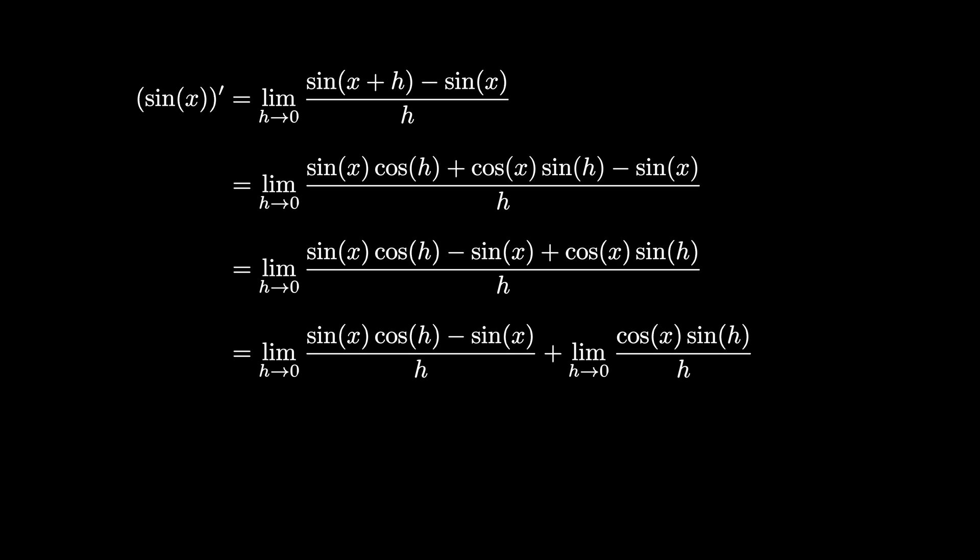In the first limit, the sine of x is constant with respect to h, so the limit becomes the sine of x times the limit as h goes to 0 of cosine h minus 1 over h. And in the second limit, the cosine of x is constant, so this limit becomes cosine of x times the limit as h goes to 0 of sine of h over h.